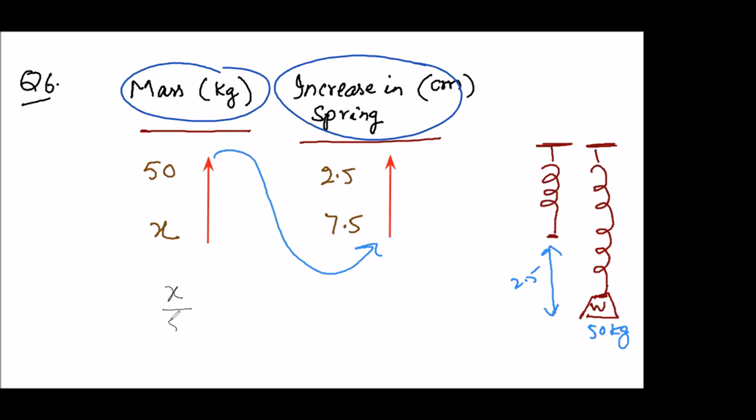First write x over 50, then 7.5 over 2.5. And after that cross multiply. We will get 7.5 multiply 50 over 2.5. Now 25 ones are 25 and 25 twos are 50. Now multiply 75 with 2, we get 150. So we will write the answer as 150 kilogram.